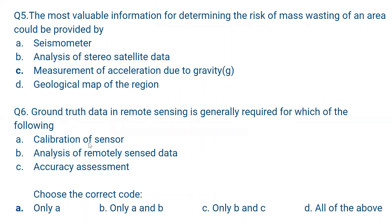Question number 5. The most valuable information for determining the risk of mass wasting of an area could be provided by A seismometer, B analysis of stereo satellite data, C measurement of acceleration due to gravity, or D geological map of the region. The correct answer is C, measurement of acceleration due to gravity. Mass wasting, or slope movement, is a geomorphic process — the transfer or movement of rocks or soil down a slope, mainly due to gravity. Therefore, measurement of acceleration due to gravity is the most important factor. Landslide is an example of mass wasting.